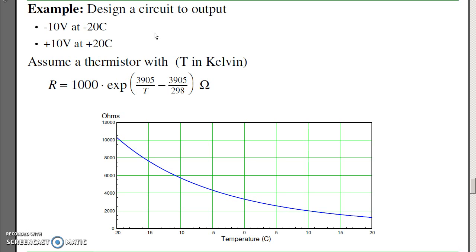If you go to the data sheets, there will be a B-term. The B-term is this number right here, 3905. That tells you how to model the thermistor.